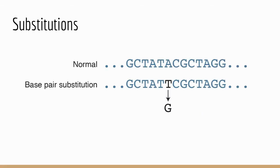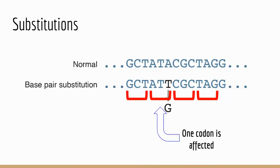The first type of mutation you came across this semester was a substitution. As a review, a substitution is where you change one base or nucleotide. Here in this example, we changed a thymine to a guanine, and if we look at the reading frame, we notice that only one codon is affected. Only one codon is affected when a substitution occurs.